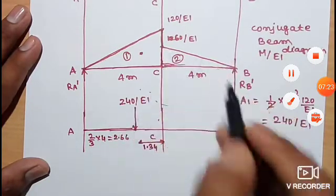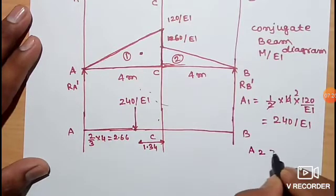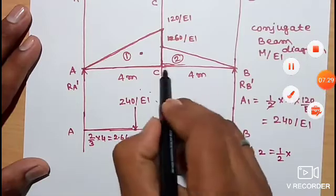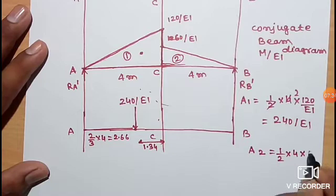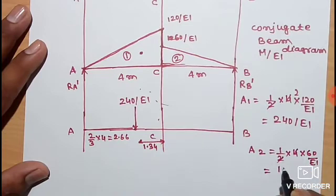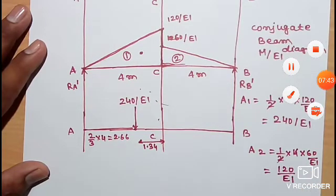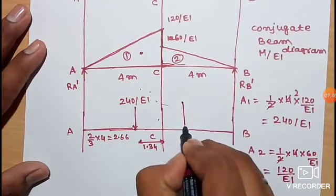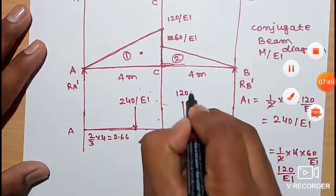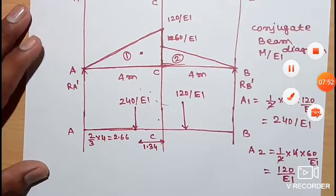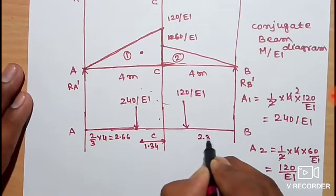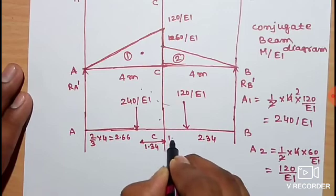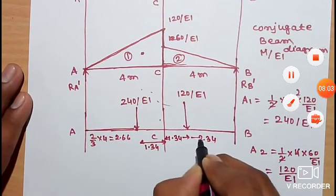For the smaller triangle from C to B: the load equals half into 4 meter span into 60 by EI, giving 120 by EI. At the centroid, this becomes 120 by EI acting at 2/3 of 4, which is approximately 2.34 meters from B, or 1.34 meters from C. This is the simplest form.